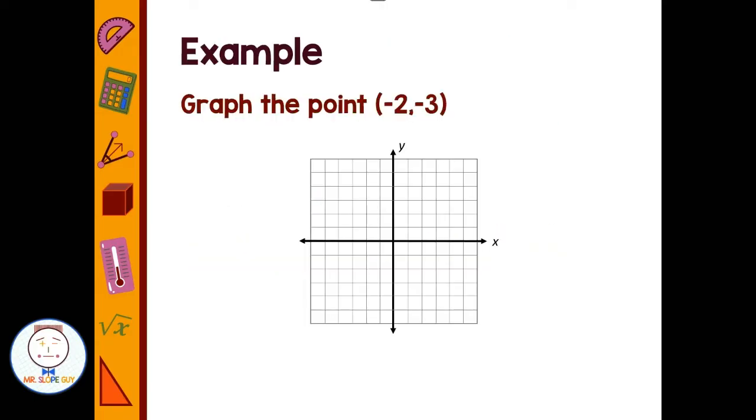For example, we're asked to graph the ordered pair (-2, -3). Well, the first number tells us how far to go left or right. It's the x. Starting at the origin (0, 0), how far do I move left or right? We're going two places. We just need to look at the sign to see which direction. Well, negative 2 means I would go left two places.